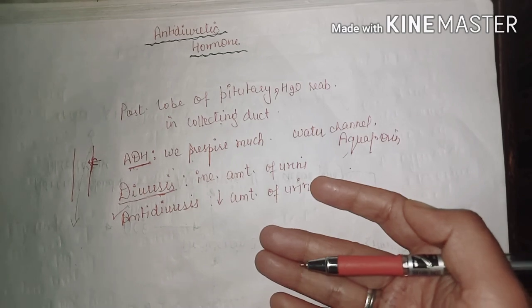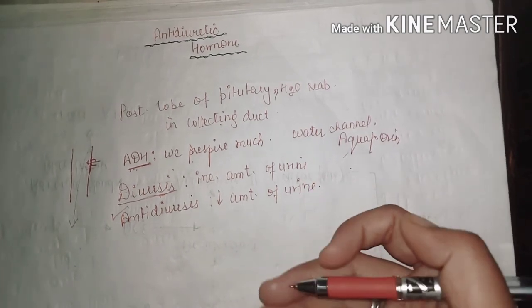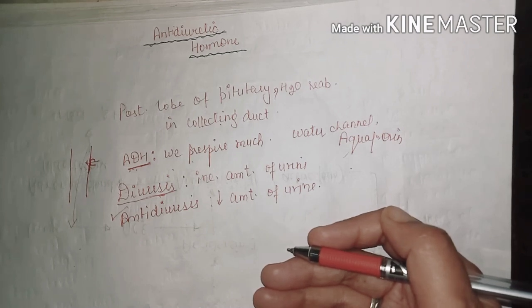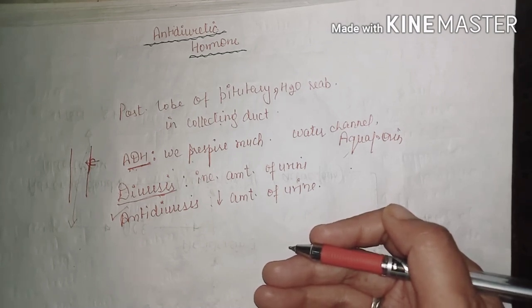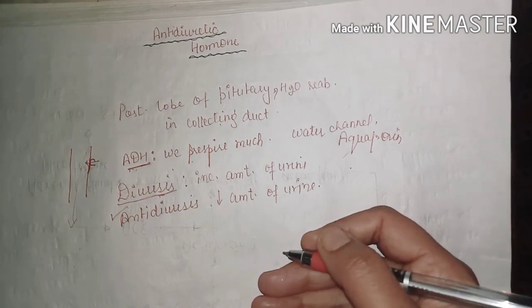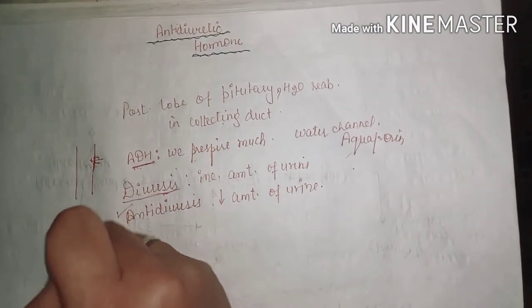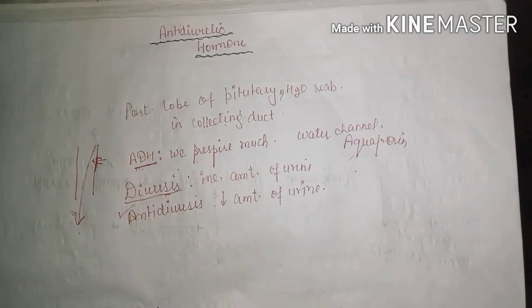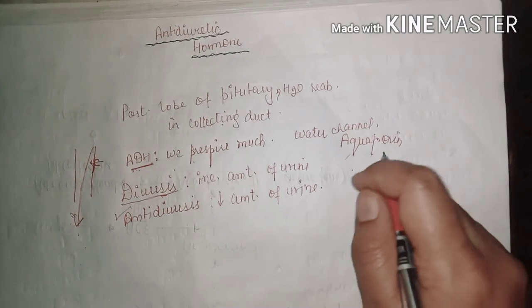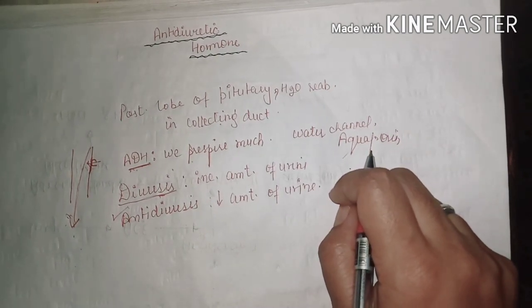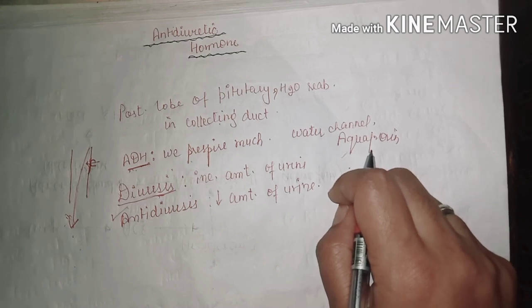In summary, ADH functions in the kidney when a person has a low amount of water. It reabsorbs water in the collecting duct and releases a reduced amount of urine from the body. That covers hormonal regulation of tubular secretion and reabsorption. Thank you.